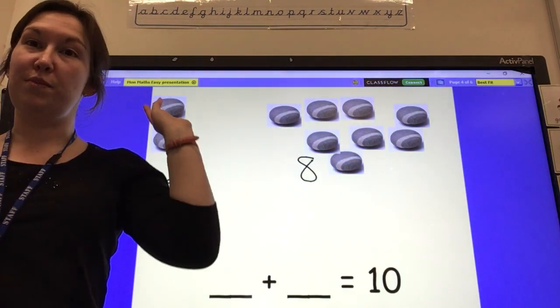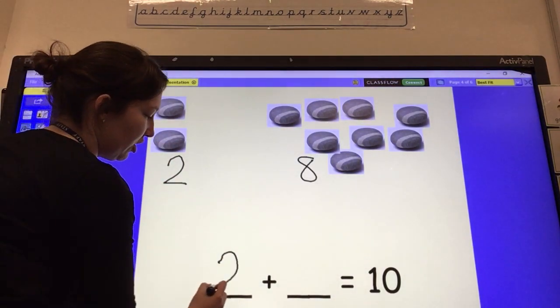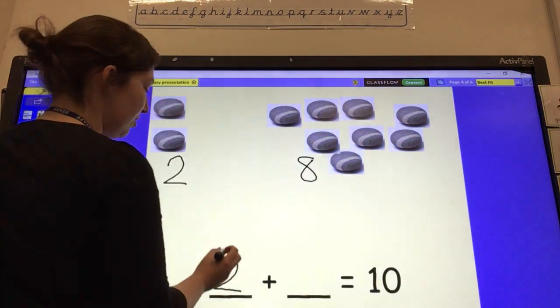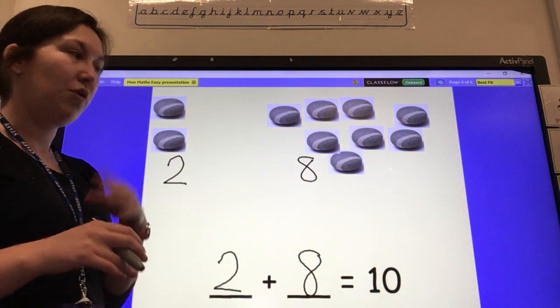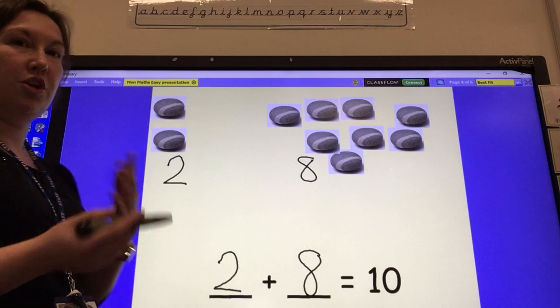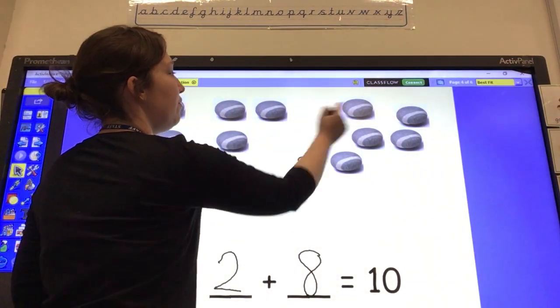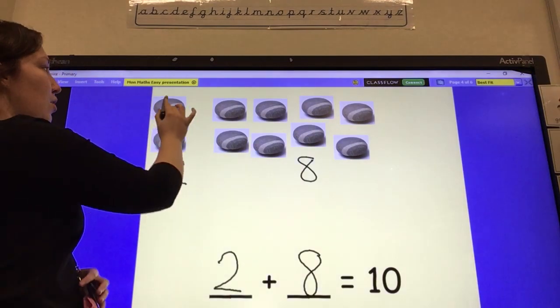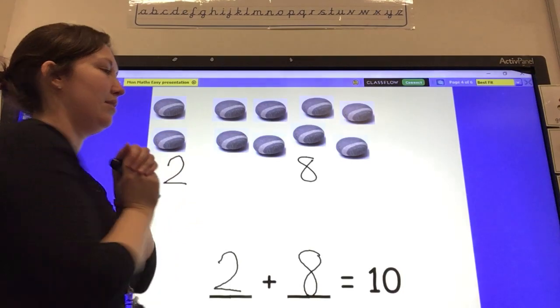Well done to everybody who said it's 10 all together. I can write this as a number sentence. I can start off with two because that was my first group on this side, and I'm adding on another eight. So 2 add 8 equals 10. Now I'm just going to check that 2 add 8 really does make 10. I've got two here and I'm going to add on eight. And then we'll count them all up just to check. One, two, three, four, five, six, seven, eight, nine, ten. So 2 add 8 does make 10.